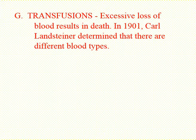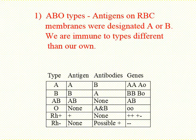It wasn't until 1901 that a man by the name of Karl Landsteiner figured out that there are different types of blood, and that if you are immune to the type of blood that they give you, you'll have an immune reaction that may end up killing you. Landsteiner figured out that there were different blood types — you've all heard of the ABO types.